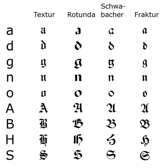Typesetting in Fraktur was still very common in the early 20th century in all German-speaking countries and areas, as well as in Norway, Estonia, and Latvia, and was still used to a very small extent in Sweden, Finland, and Denmark, while other countries typeset in Antiqua. Some books at that time used related blackletter fonts such as Schwabacher; however, the predominant typeface was the normal Fraktur, which came in slight variations.